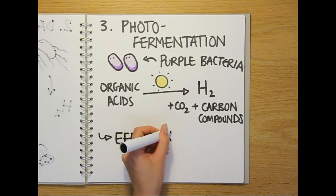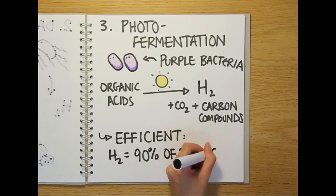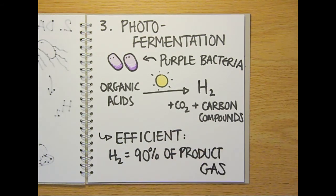The biohydrogen produced usually makes up around 90% of the gas released from the reactors and has no poisonous contaminants like carbon monoxide or hydrogen sulfide.